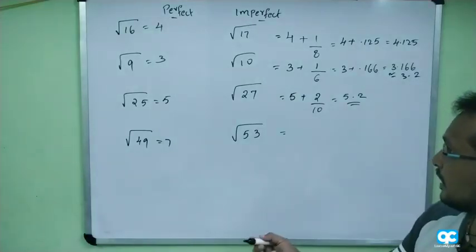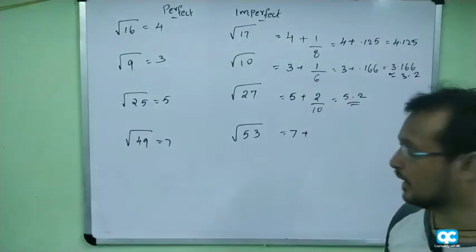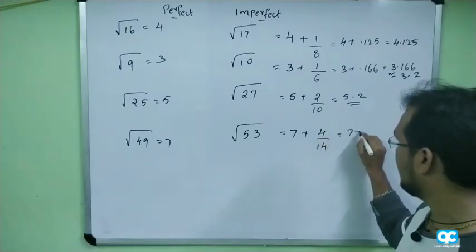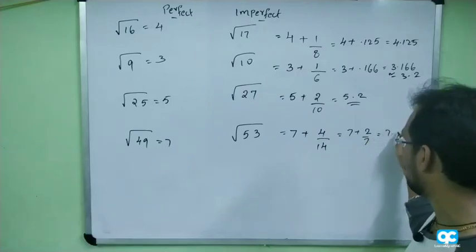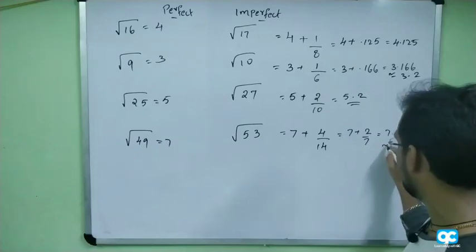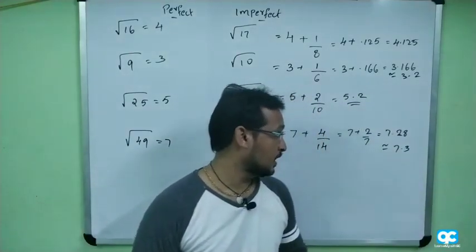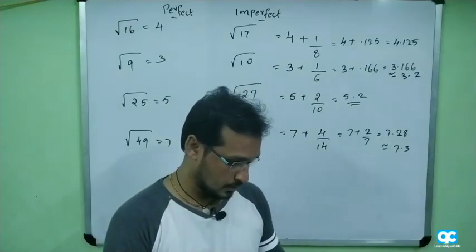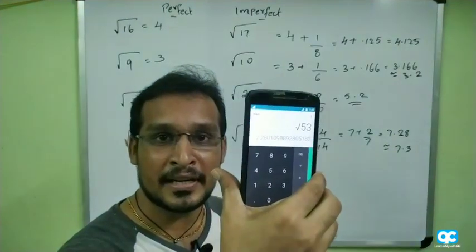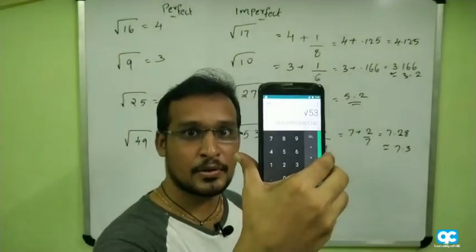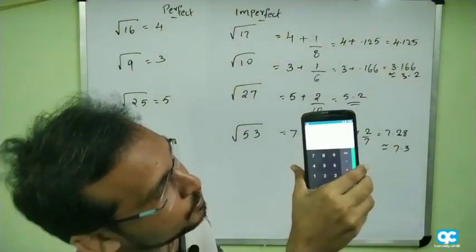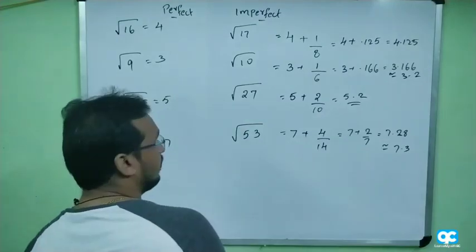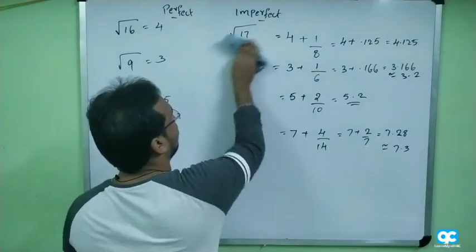For √53, the perfect square below is 49, which is 7 squared. We have 4 remaining. 4 divided by 14 gives us 2/14. So 7 plus 2/14, approximately 7.3. Let me check: root 53 equals 7.28. We got 7.3, which is close.